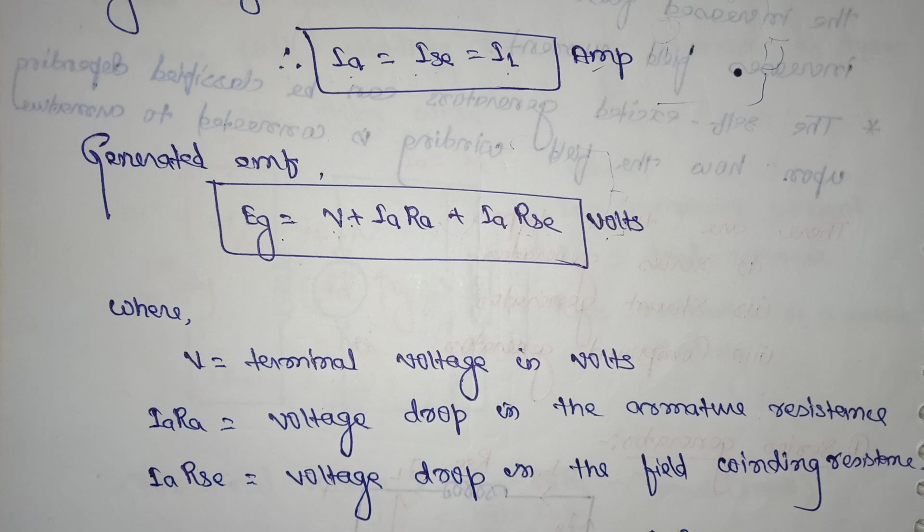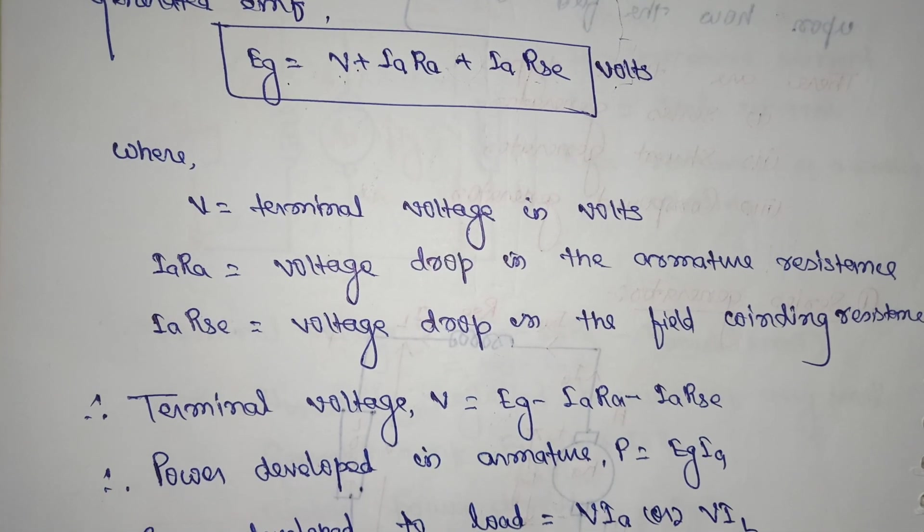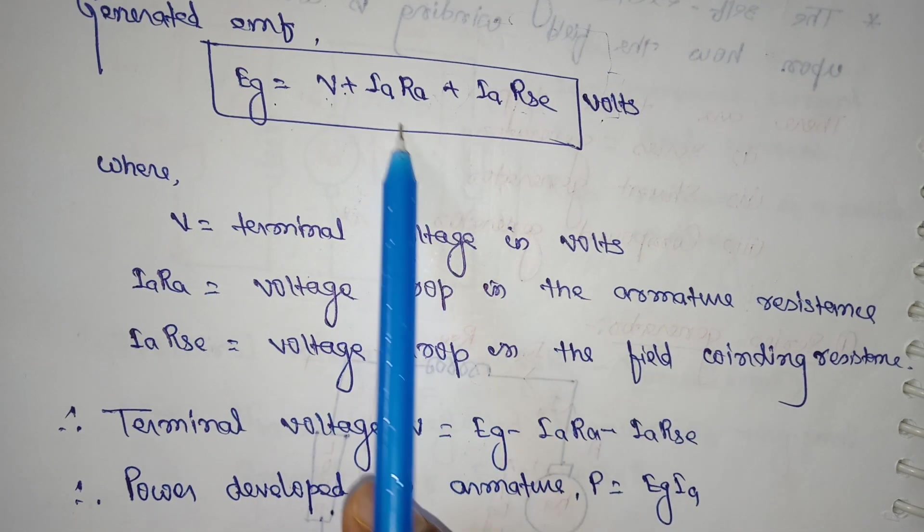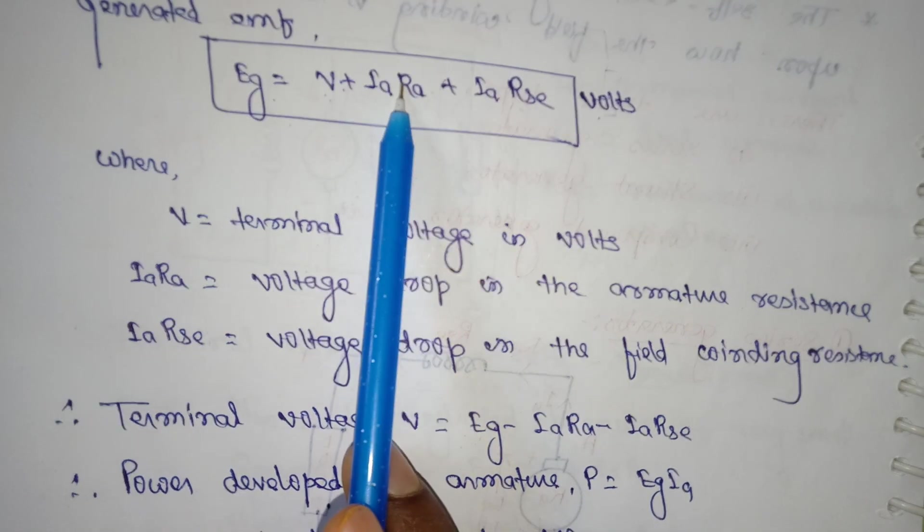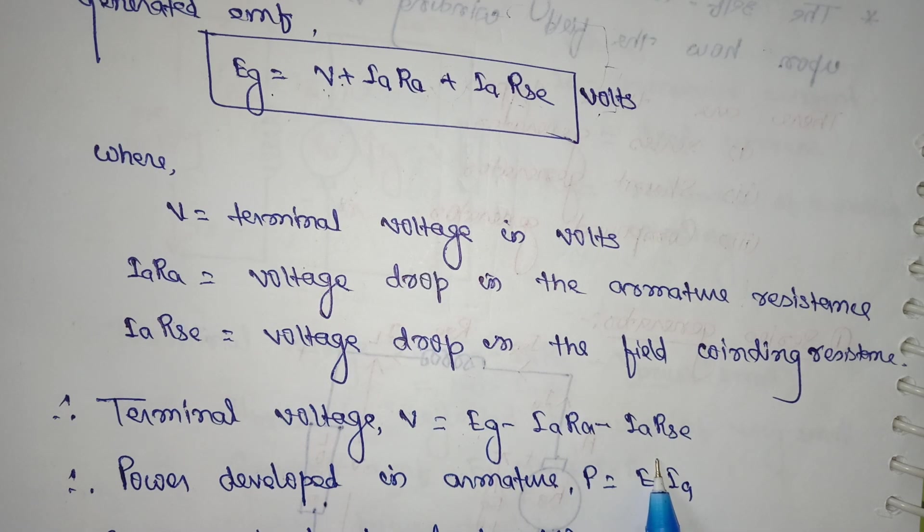Next, the terminal voltage we have to find out. The terminal voltage V = Eg - IaRa - IaRse. Same thing we've written here from the above equations.